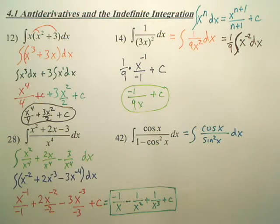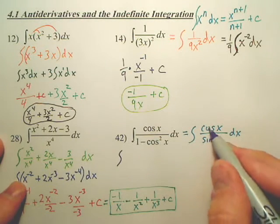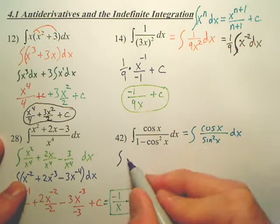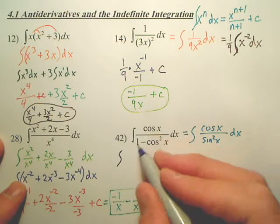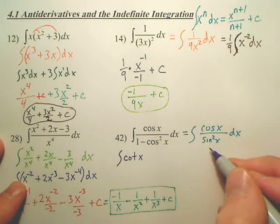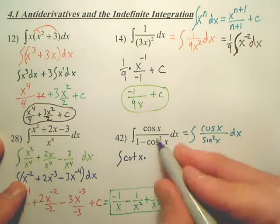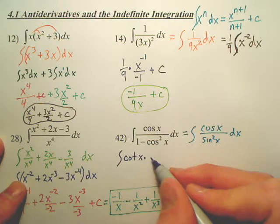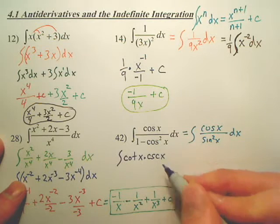Now, next, from there, you can rewrite that as the integral of, isn't that technically going to be a, what's cosine over sine? Isn't that cotangent x, and a, what's 1 over sine? Isn't it cosecant x?